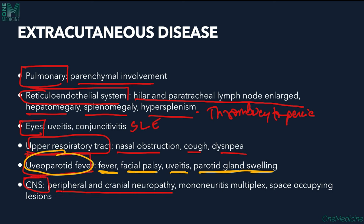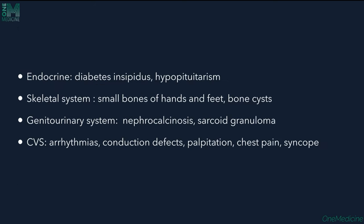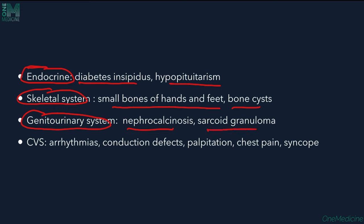CNS involvement shows peripheral and cranial neuropathy, mononeuritis multiplex, and space-occupying lesions. Endocrine manifestations include diabetes insipidus and hypopituitarism. Skeletal involvement affects small bones of the hands and feet, with bone cysts. Genitourinary manifestations include nephrocalcinosis due to hypercalciuria and hypercalcemia, and sarcoidal granuloma deposition in the kidney.